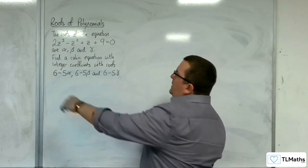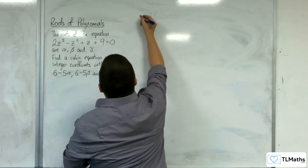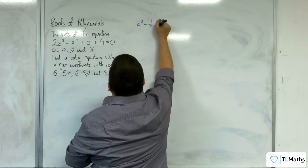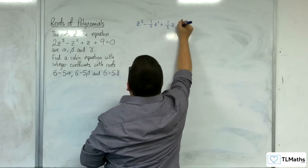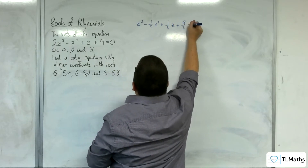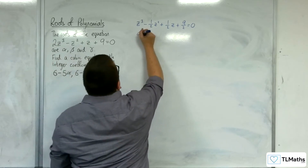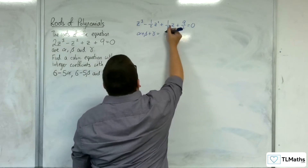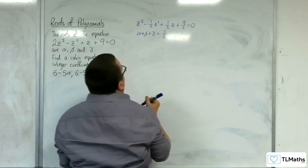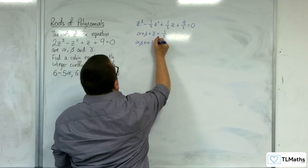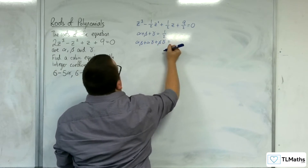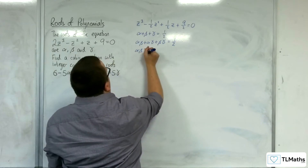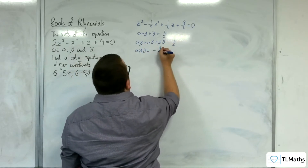First of all, we need to get the coefficient of z cubed to be 1, so divide through by 2. So z cubed take away one half z squared plus one half z plus nine halves equals 0. That means alpha plus beta plus gamma equals positive one half; alpha beta plus alpha gamma plus beta gamma equals one half; and alpha beta gamma equals negative nine halves.